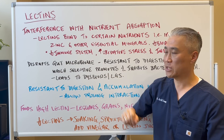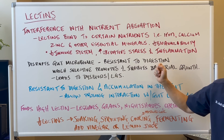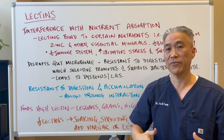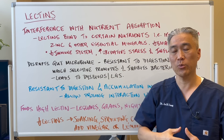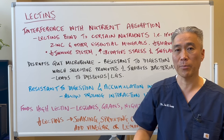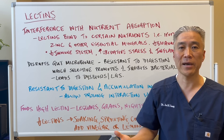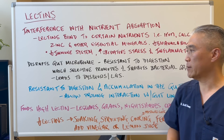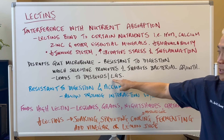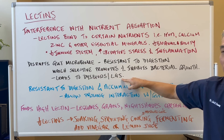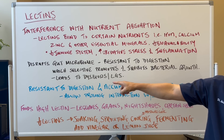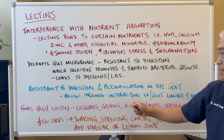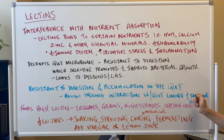Lectins also disrupt the gut microbiome. They are resistant to digestion, which selectively promotes the growth or inhibition of gut bacteria, throwing off your gut microbiome and potentially leading to dysbiosis — an imbalance of the gut flora, also associated with leaky gut syndrome. Their resistance to digestion means they accumulate in the gut, allowing prolonged interaction with the gut lining and the immune system, causing more inflammation.